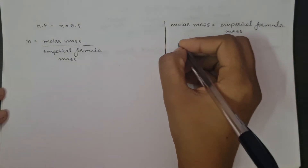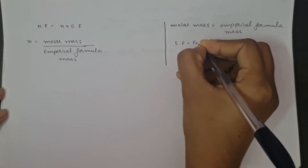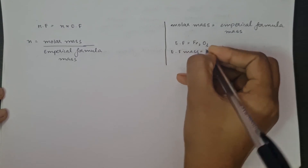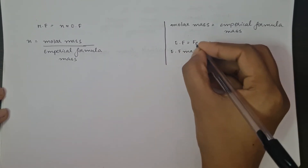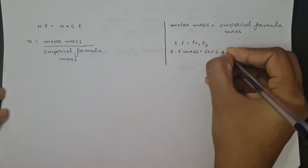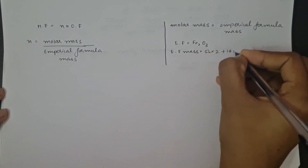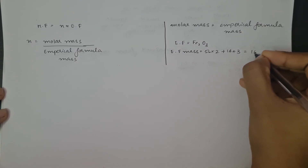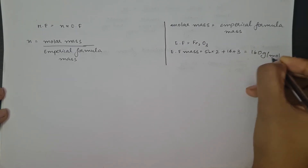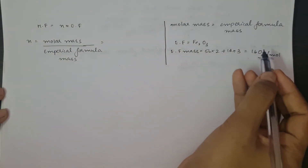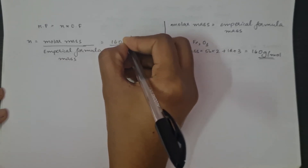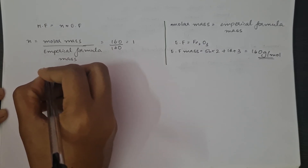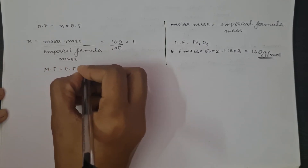The empirical formula is Fe₂O₃, so we calculate its empirical formula mass: atomic mass of Fe is 56 multiplied by 2 iron atoms, plus atomic mass of oxygen is 16 multiplied by 3 atoms, giving us 160 g/mol. Therefore, n = molar mass / empirical formula mass = 160 / 160 = 1. So the molecular formula equals the empirical formula, which is Fe₂O₃.